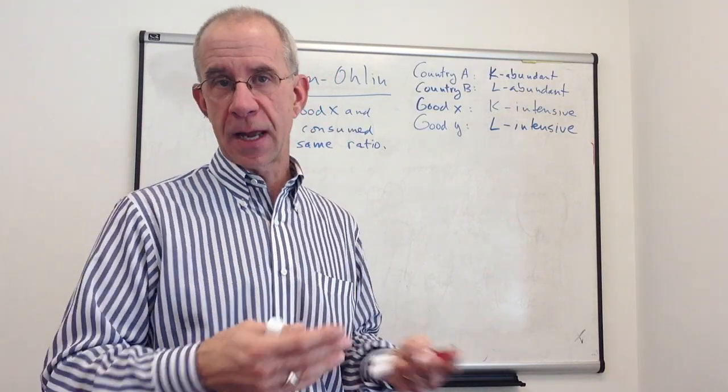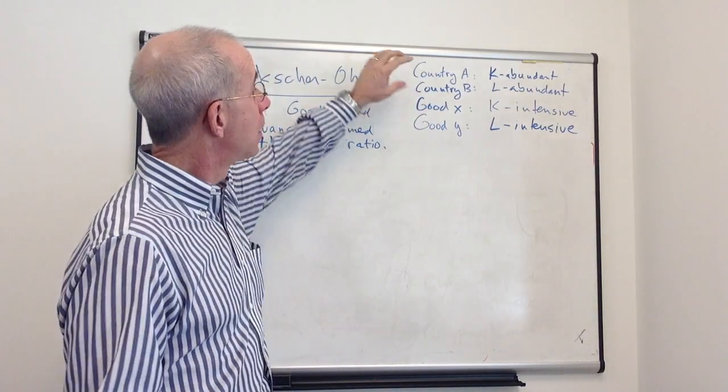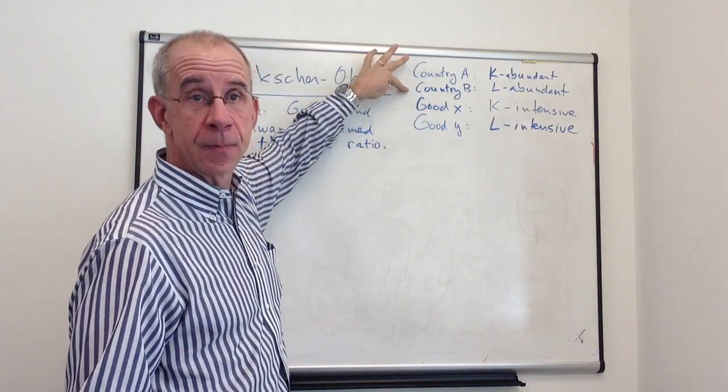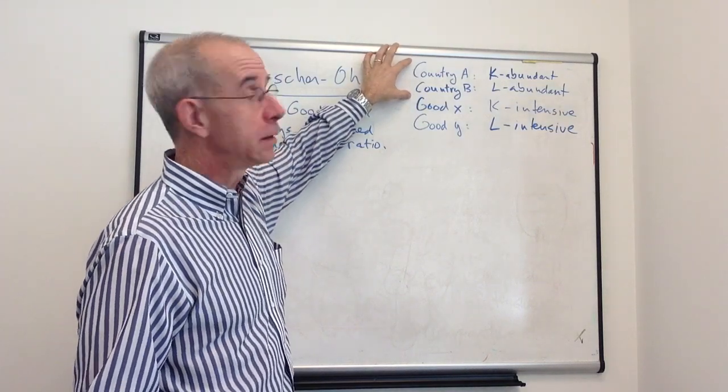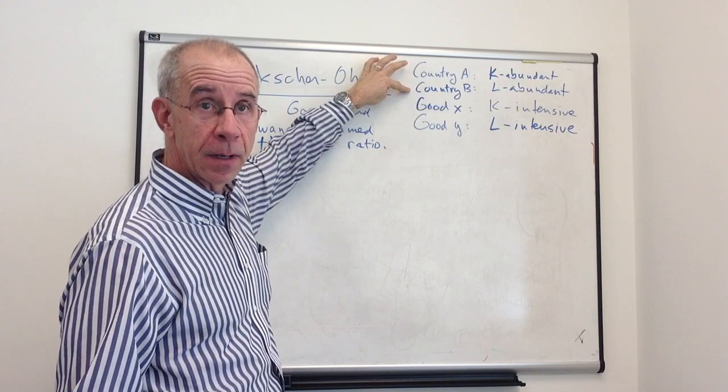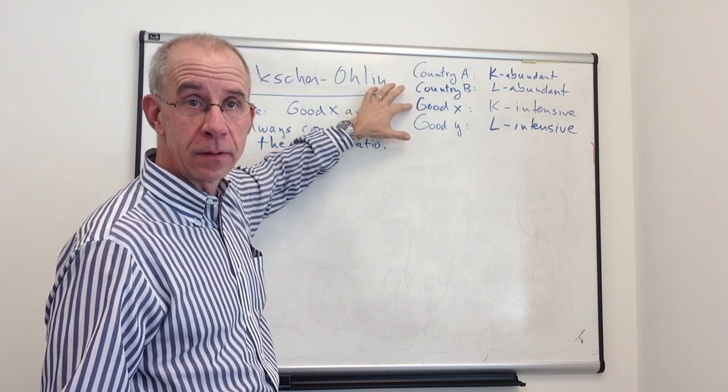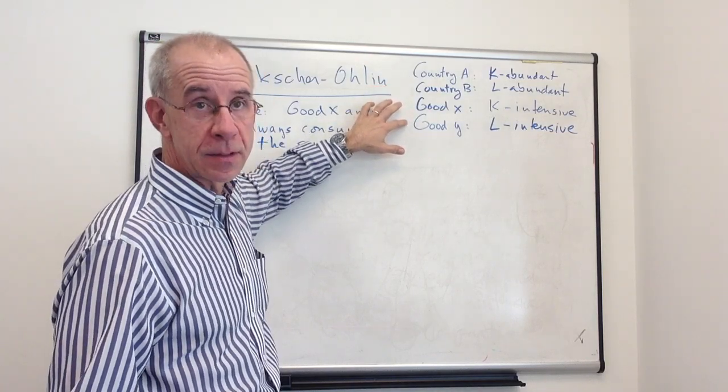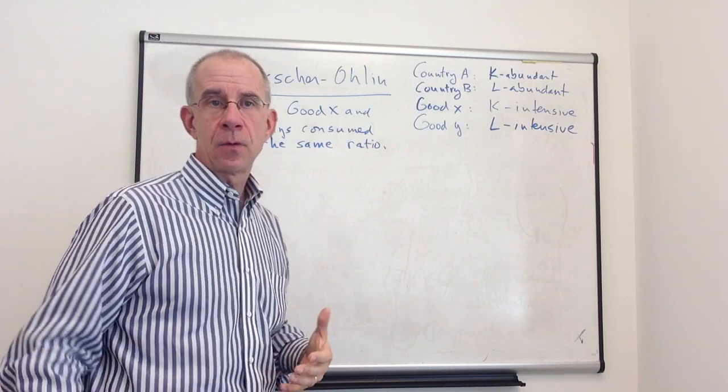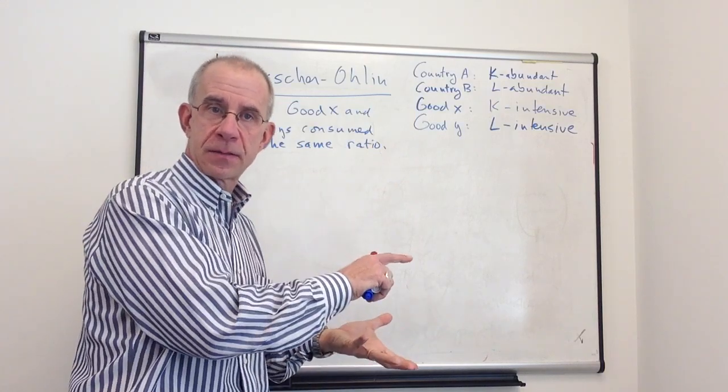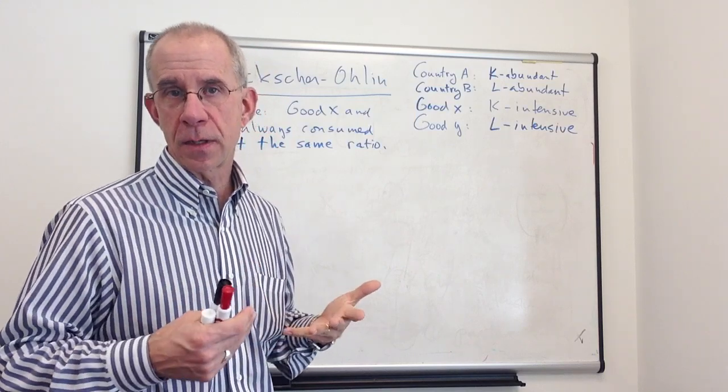And the goods have different factor intensities. The particular assumption is we have two countries, country A and country B. We're going to assume that country A is capital abundant, equivalently that country B is labor abundant. Good X is the capital intensive good in both countries. Y is the labor intensive good in both countries. And we will have this set up in order to analyze the direction of trade according to Heckscher-Ohlin.